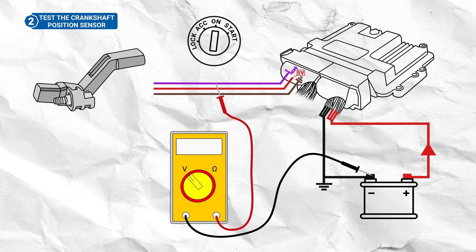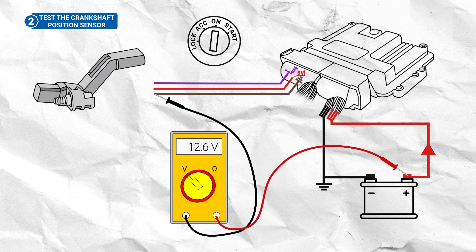Finally, check the ground connection by moving the red probe to the positive battery terminal, and the black probe to the ground terminal at the sensor connector. The reading this time should be battery voltage of around 12.6 volts.